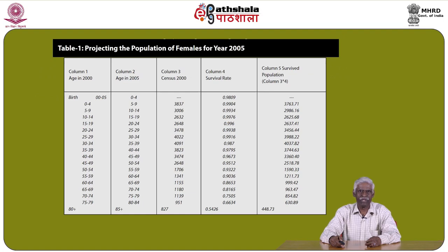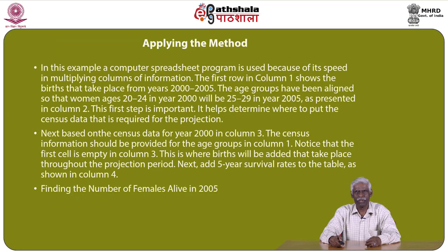Column 1 refers to age in the year 2000, column 2 refers to age in 2005, column 3 refers to census 2000 data, column 4 refers to survival rates, and column 5 is the survived population obtained by multiplying columns 3 and 4. The data clearly depicts the various calculations and results across different age groups during the projection.